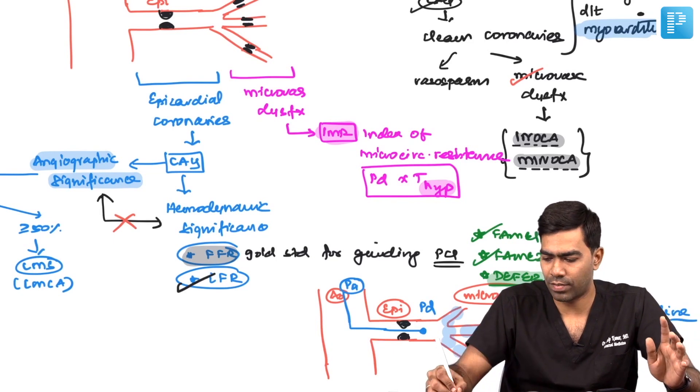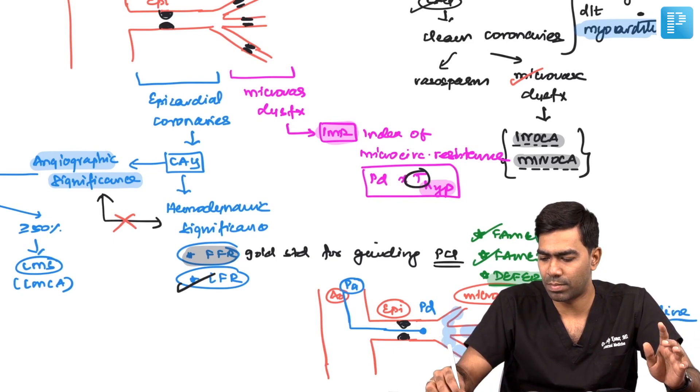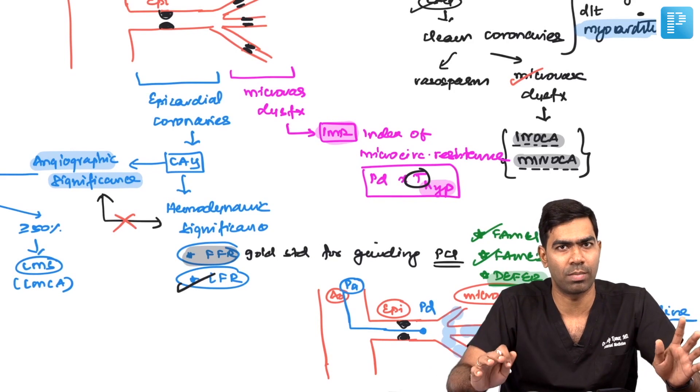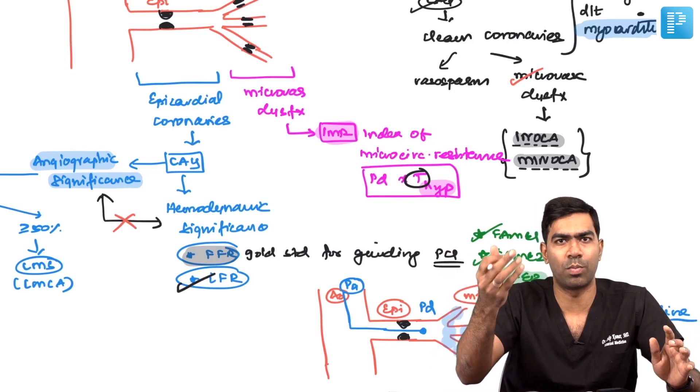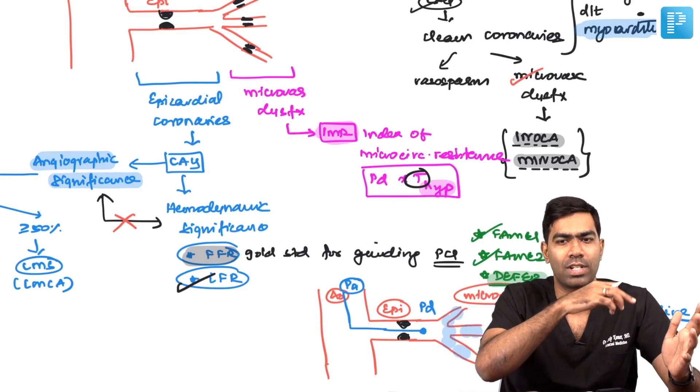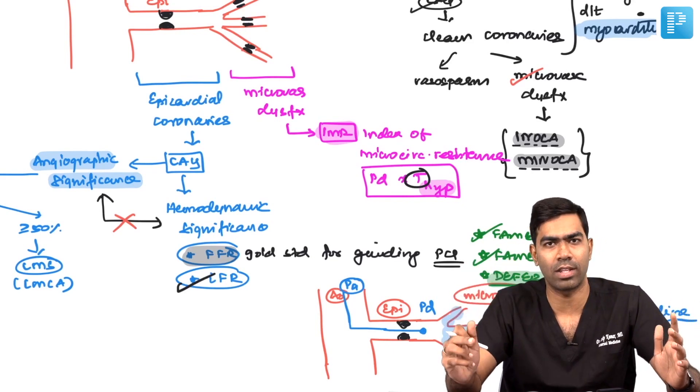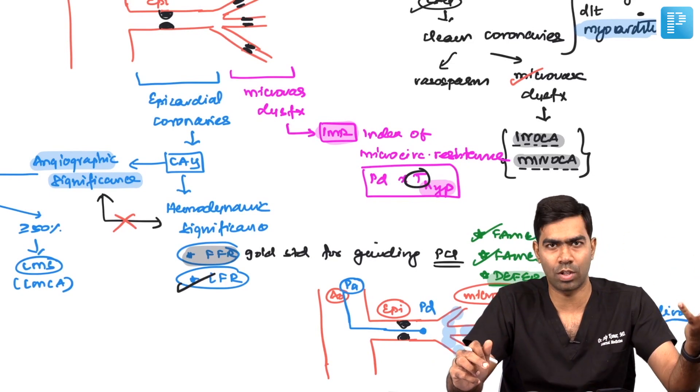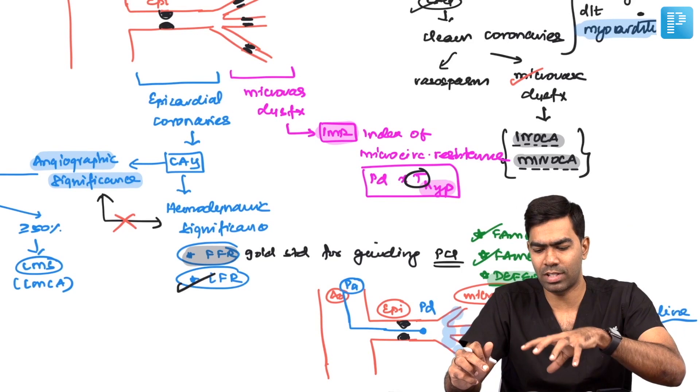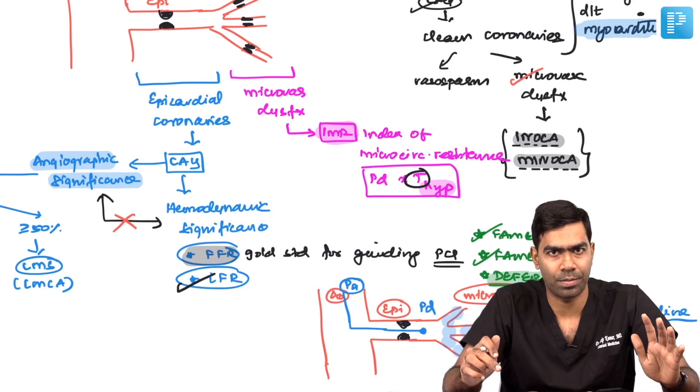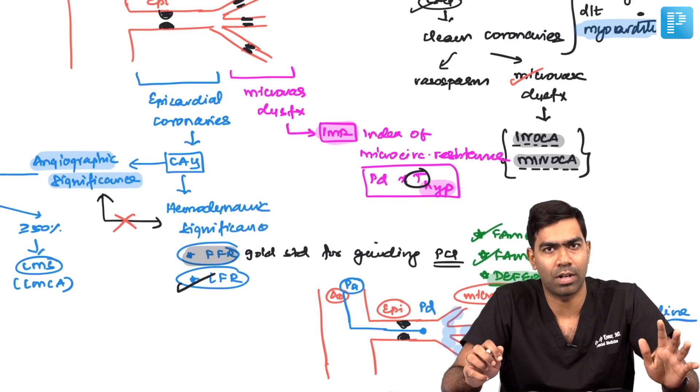Whenever I say transit time, remember it means coronary blood flow, because the amount of coronary blood flow is proportional to transit time. The time it takes for blood to move from one area to another is proportionally equal to coronary blood flow. That can be used as an index of coronary blood flow. This is the formula for IMR. IMR is not of that much utility.